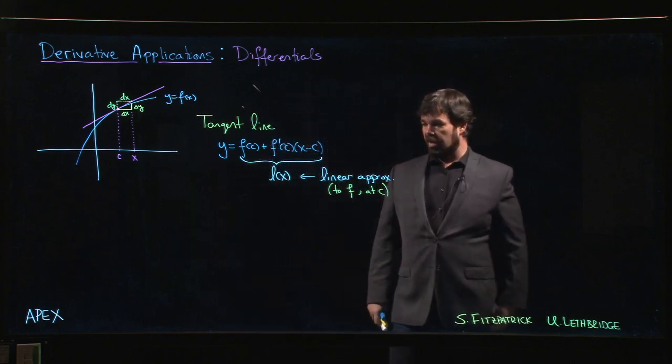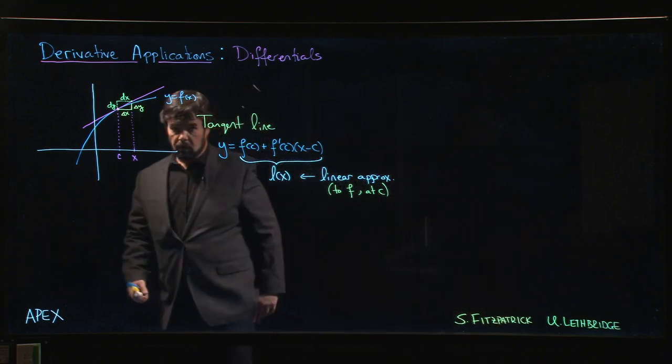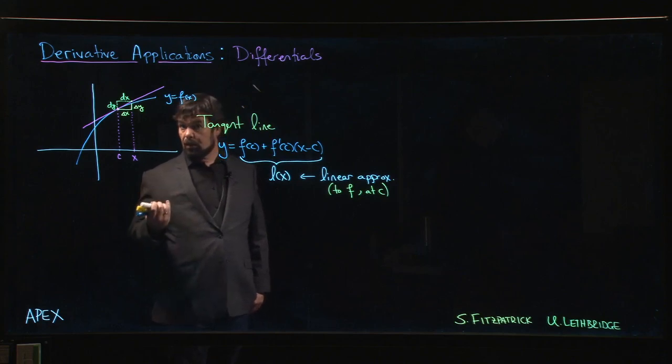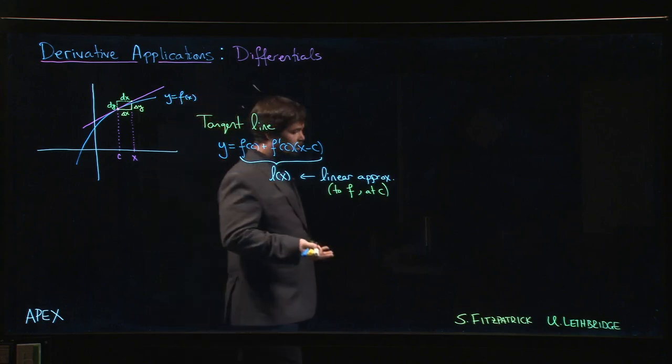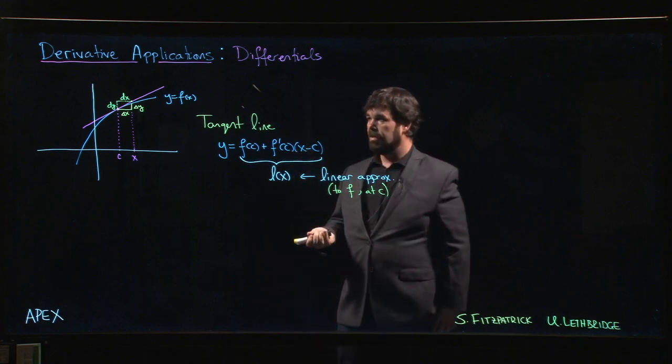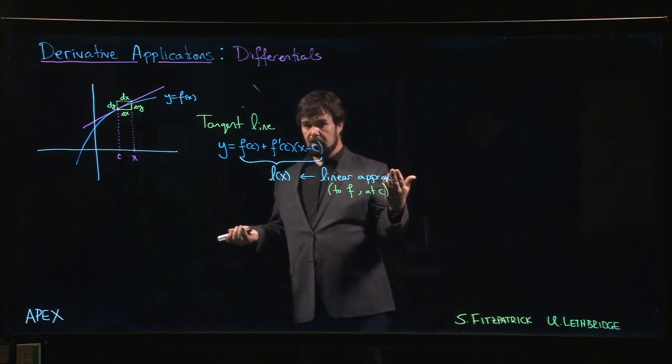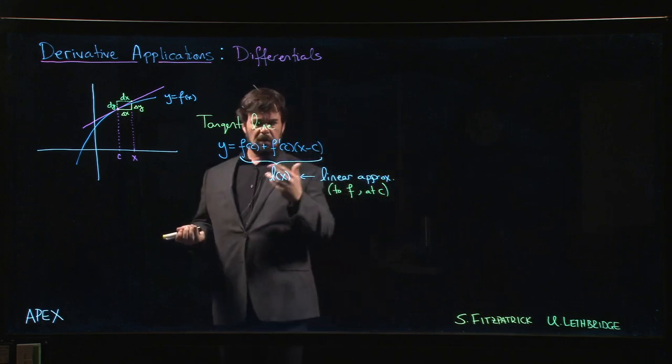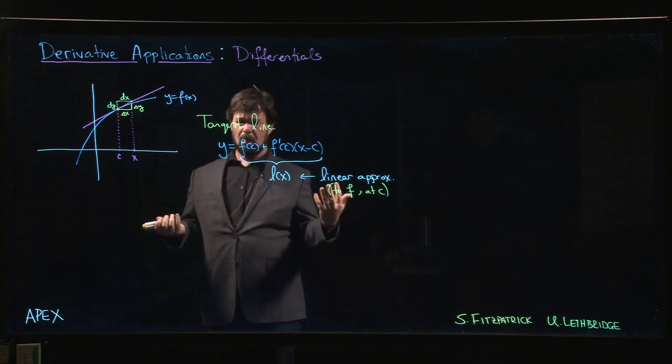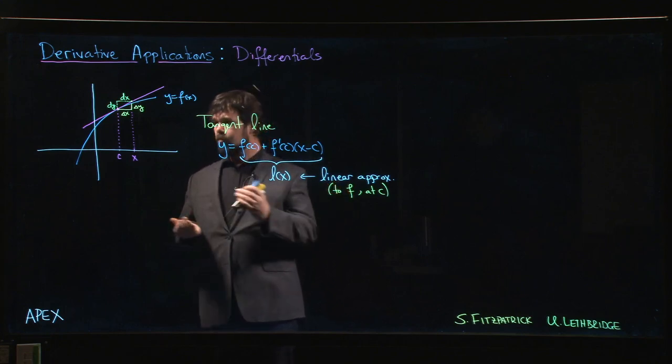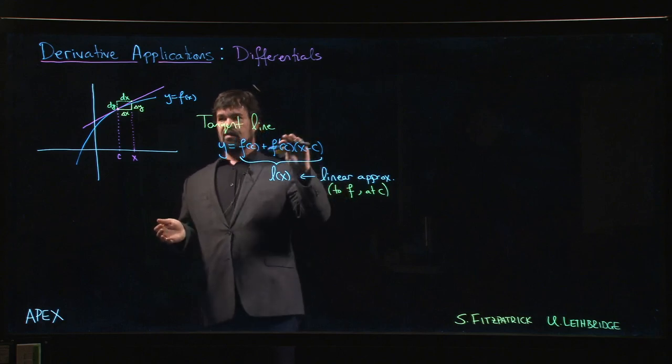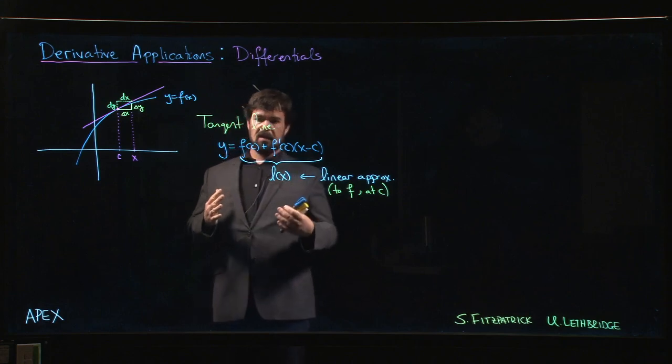More complicated functions, even things like trig functions, are harder to compute. We can't write down values off the top of our head for a trig function or an exponential function. The best we can do is probably put things into a calculator. We don't know how to compute these by hand. Linear functions we can compute by hand, even if some of the numbers are a little bit ugly. We like to have these linear approximations and tangent lines.